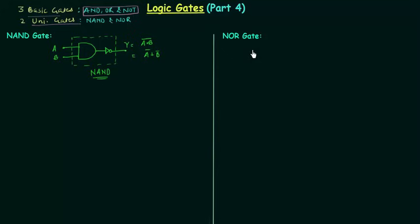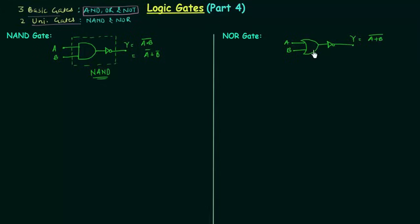Now we will find the NOR gate. To obtain NOR gate we have to complement the output of OR gate. So I will make a 2-input OR gate with inputs A and B, and then I will use an inverter. The output Y is equal to A OR B, whole complement. So this OR gate and this inverter together make our NOR gate. And if we apply De Morgan's law, Y is equal to A complement AND B complement.